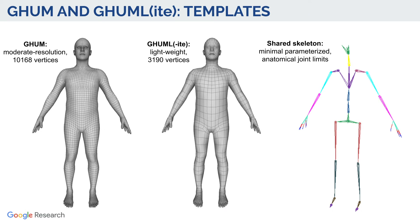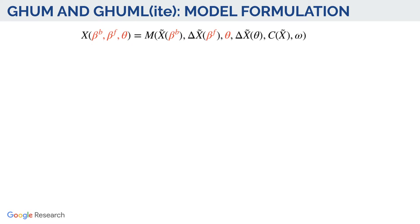We present two generative human models: the moderate-resolution GAM and the lightweight GAMLight, having 10K and 3K vertices respectively. Both are based on an initial template mesh rigged with a minimally parameterized full-body skeleton equipped with anatomical joint angle limits. We model human body deformations as a linear blend skinning mesh with skinning weights omega, articulated by a skeleton with state theta.